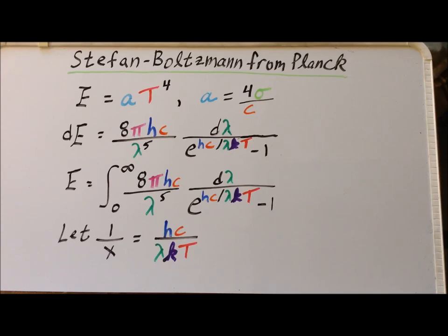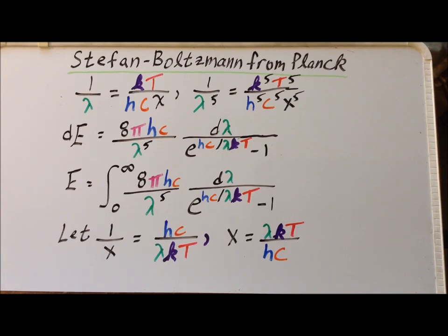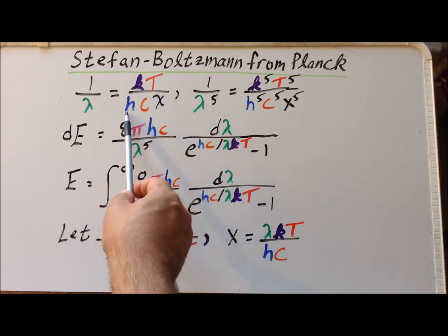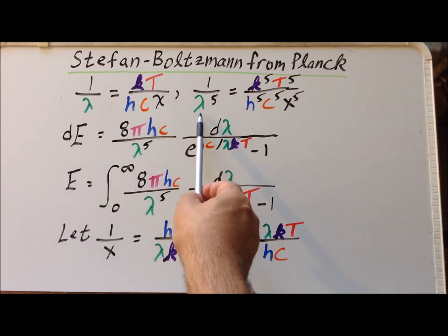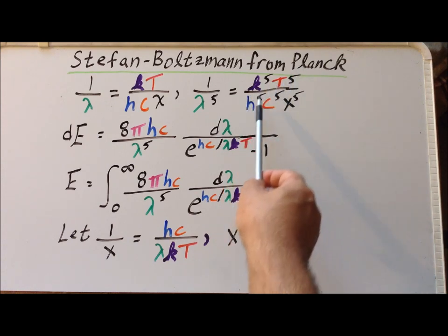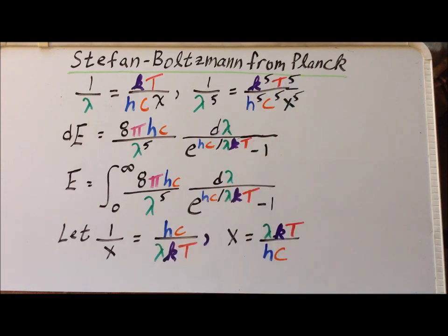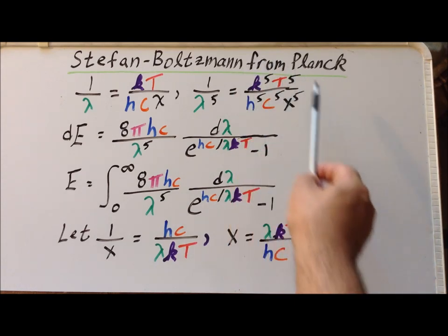We're going to need to make a substitution. Let 1 over x equal hc divided by λkT. Essentially, we're converting this complicated exponent into 1 over x. We can solve for x and we get that x is equal to λkT over hc. Another necessary relationship to derive from this is that 1 over λ equals kT over hcx. So 1 over λ to the fifth is k to the fifth, T to the fifth, over h to the fifth, c to the fifth, times x to the fifth. This may seem overly complicated, but we're going to be able to use that pretty soon.